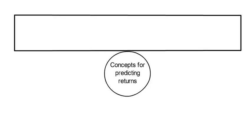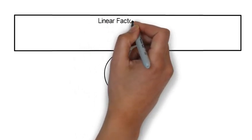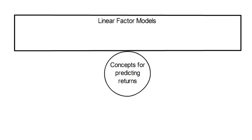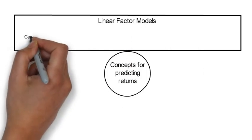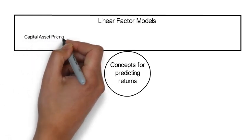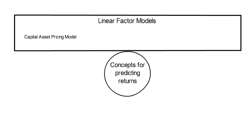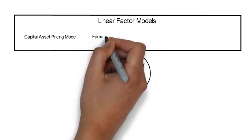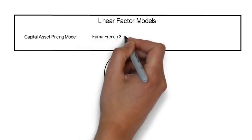One class of models are linear factor models. I call these fundamental financial return predicting models. Well-known examples are the capital asset pricing model, also called in short CAPM, or the Fama-French three-factor model, or the Fama-French five-factor model.